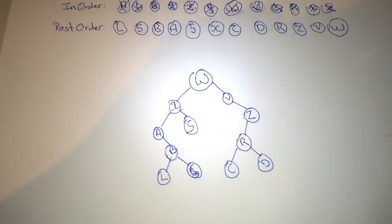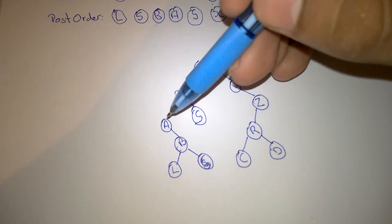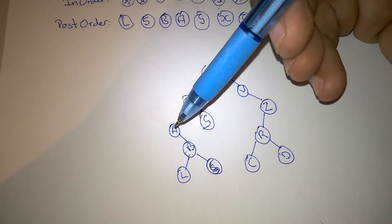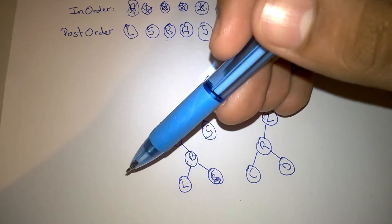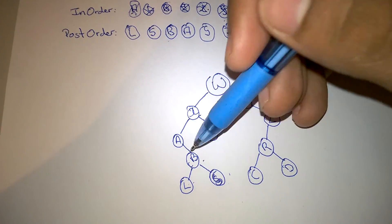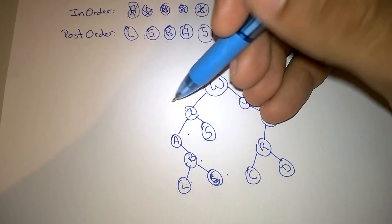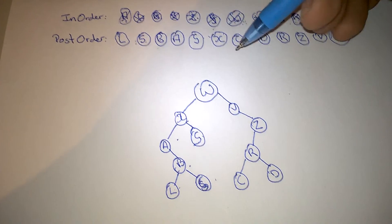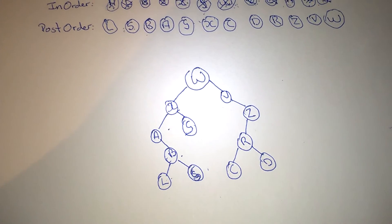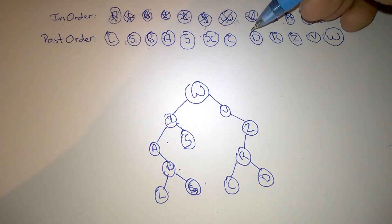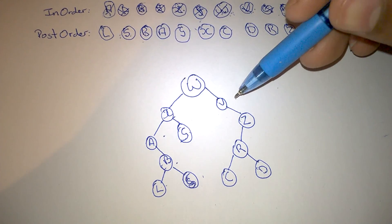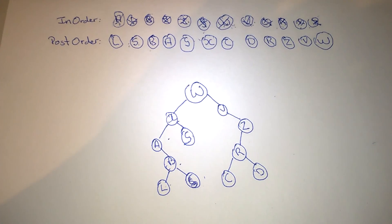So if you want to check your answer, you simply do the normal post-order traversal, which is you start from the furthest left and go left, right, parent. There's none to the left of A, so we start from the right of A: L, S, B, A, G, X. Then on the right-hand side, none to the left of V, so we go straight to the right of V: C, D, R. Then straight back up to Z, up to V, and then back up to W. That's just the normal post-order traversal.